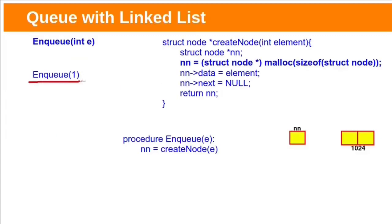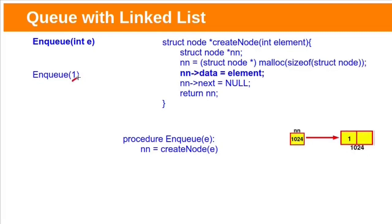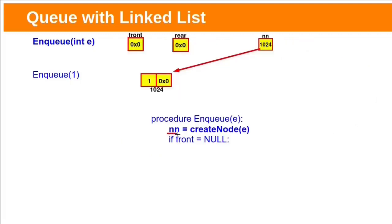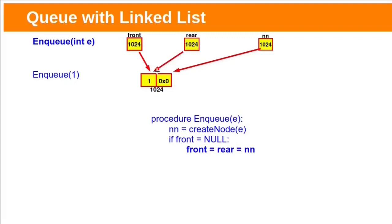If we want to add one element to our queue in linked list implementation, we need to allocate memory dynamically on heap. This createNode function will allocate memory for a linked list node on heap using the malloc function. The base address of allocated memory is stored in the new node pointer. If we pass argument 1 to this enqueue function, that value will be stored in the new node data field. Initially, the newly created node's next field will be null. This createNode function will return the new node address to the calling function, so the new node pointer in enqueue function will be pointing to the newly created node. Initially, global variables front and rear will be null, meaning queue is empty. Since this is the first node and front is null, make this new node as front. Right now rear is also pointing to this only node in queue, so front and rear are both assigned the new node address.